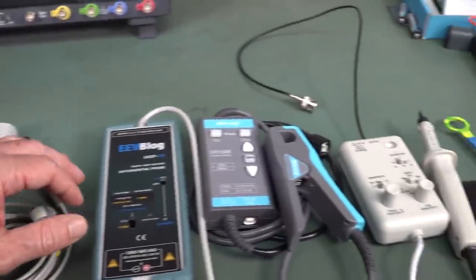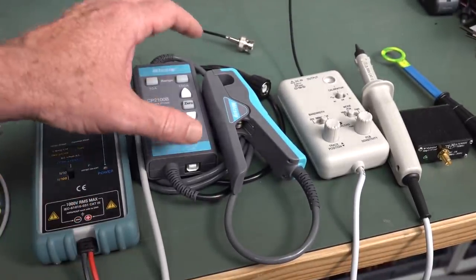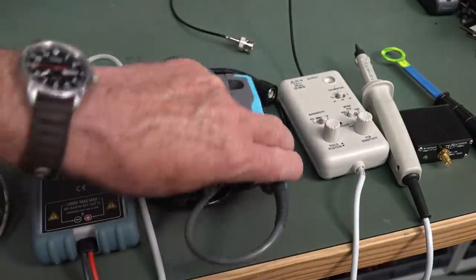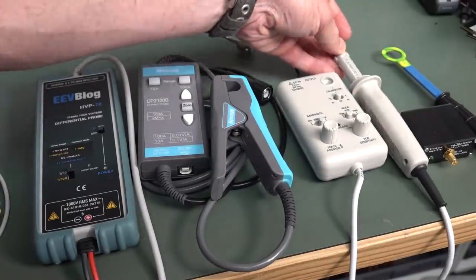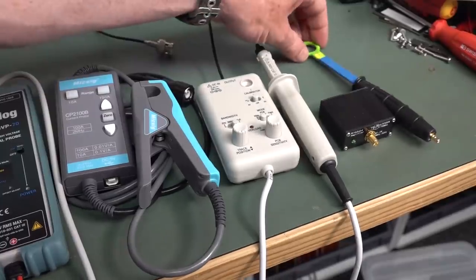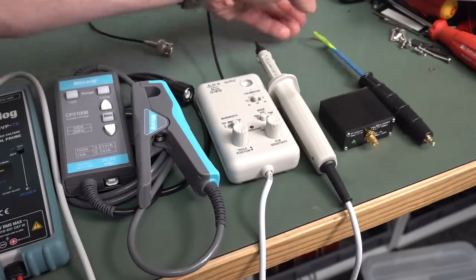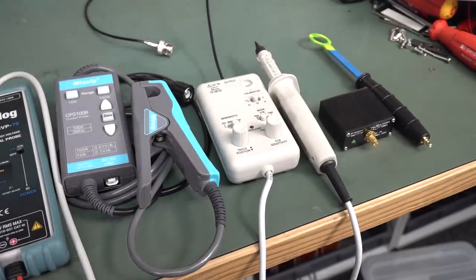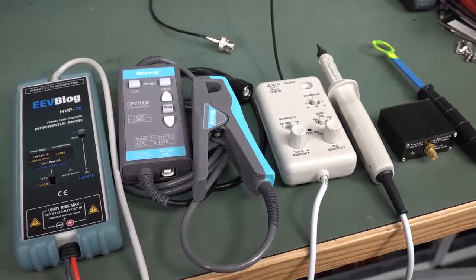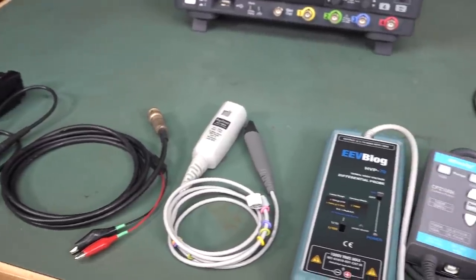These are what are called passive probes because they contain no active circuitry at all. They might have some compensation trimmer capacitors and resistors in them. But basically, no active electronics. And then we'll take a look at active probes, which will actually contain active FET amplifiers inside the probe itself.